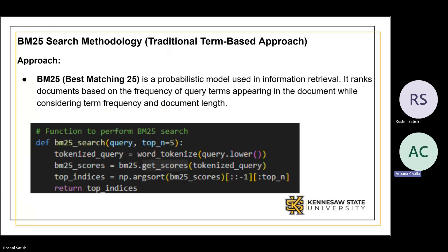The second model used is the BM25 search model. This is a probabilistic model that ranks documents based on TF-IDF, and it ignores any semantic similarity between them.